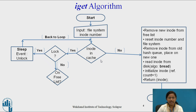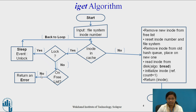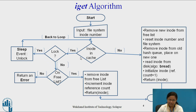Suppose that i-node is present in cache and it is not locked — then the kernel has to check whether it is present in the free list. If it is not present in the free list, then the kernel has to return an error because in this case the kernel does not know when that i-node will become free. But suppose the i-node is present in cache, not locked, and present on the free list — meaning that i-node is free. So remove that i-node from the free list, increment the i-node reference count, and return that i-node to the process.